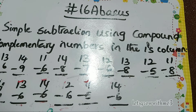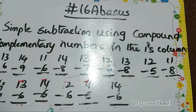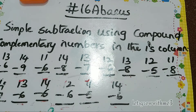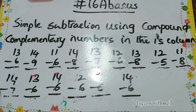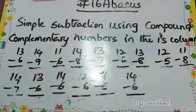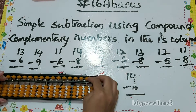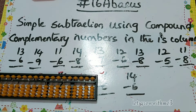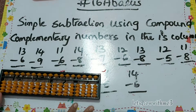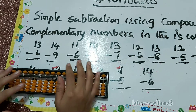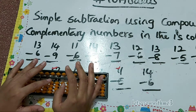Hello guys, welcome back to my channel. In this video we are going to learn simple subtraction using compound complementary numbers in the ones column. First we have to use the direct method. If we can't do it using the direct method, then we have to go for small friend, then big friend, or else we have to go for combination.